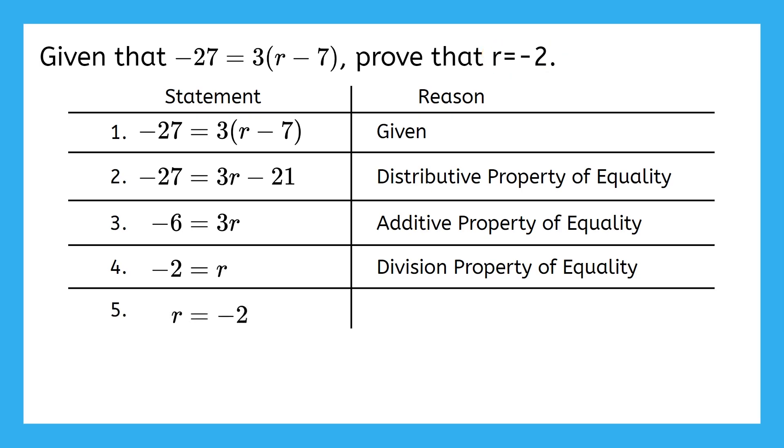That's definitely correct, but which property of equality lets me switch an equation around? The symmetric property of equality. Even though it might seem obvious that negative 2 equals r and r equals negative 2 are the same thing, we have to justify everything in proofs.